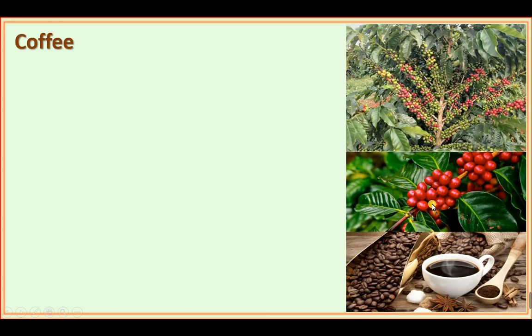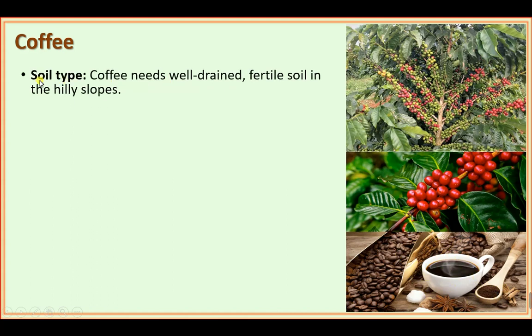Now coffee — from the coffee plant you can see the coffee fruits. Coffee beans are taken out, roasted, ground into powder, and then used as coffee. Soil type: coffee needs well-drained, fertile soil in hilly slopes, so it also grows in hilly regions.